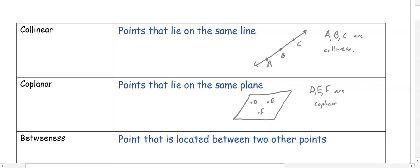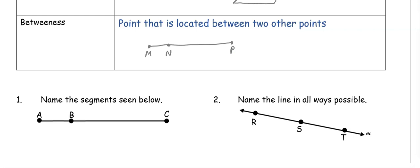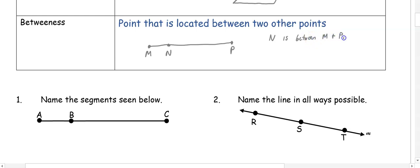Lastly, we have betweenness. Betweenness is a point that is located between two other points. On this line, we could have M, N, and P. Notice that 'between' does not necessarily mean directly in the middle — it just means that the point is somewhere between those two endpoints. So we could say N is between M and P.